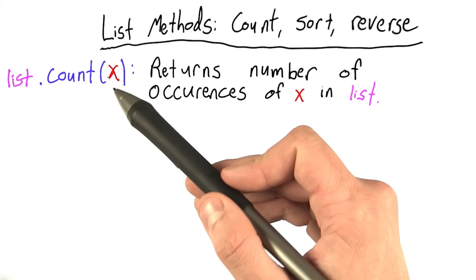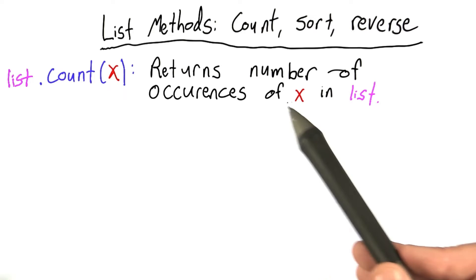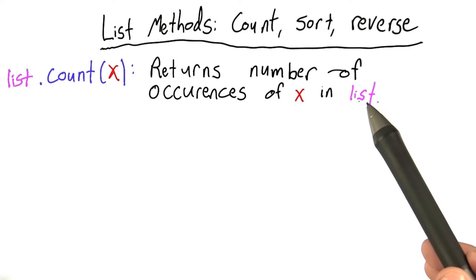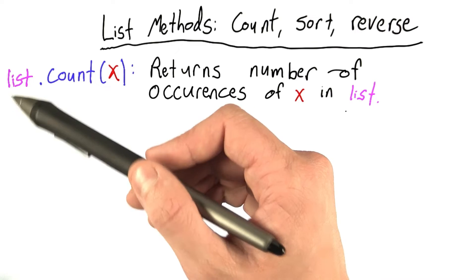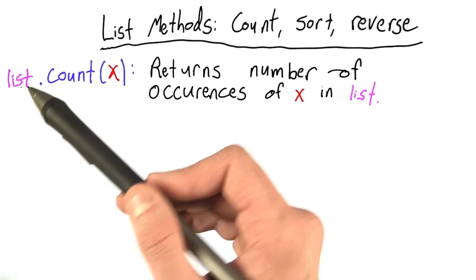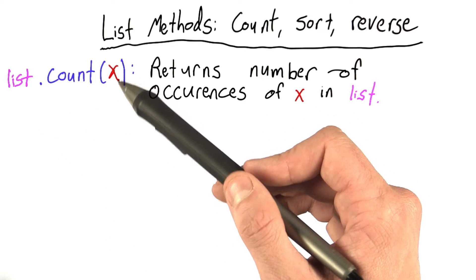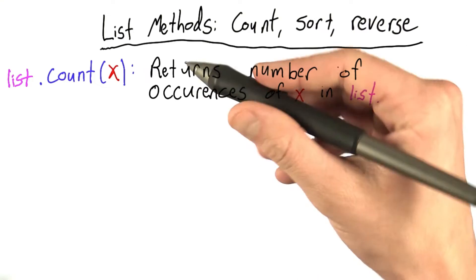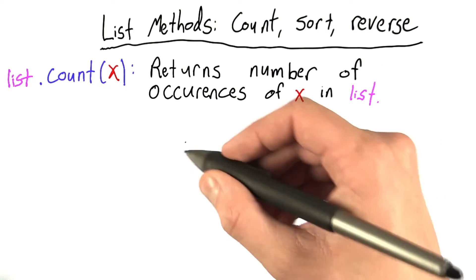list.count(x) returns the number of occurrences of x in the list, and here we've just called it list. The way you would use this is you would write the name of your list here and whatever element you want to count. I should mention that I've basically taken this description straight from the Python documentation.